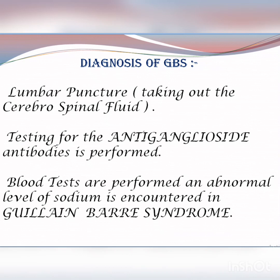Coming on to the diagnosis of GBS — how Guillain-Barré syndrome is diagnosed. The first method is lumbar puncture, which means taking out cerebrospinal fluid from the L3 and L4 part of the lumbar spine. The second involves testing for anti-ganglioside antibodies. The next involves blood tests which are performed for detecting abnormal sodium levels in Guillain-Barré syndrome.